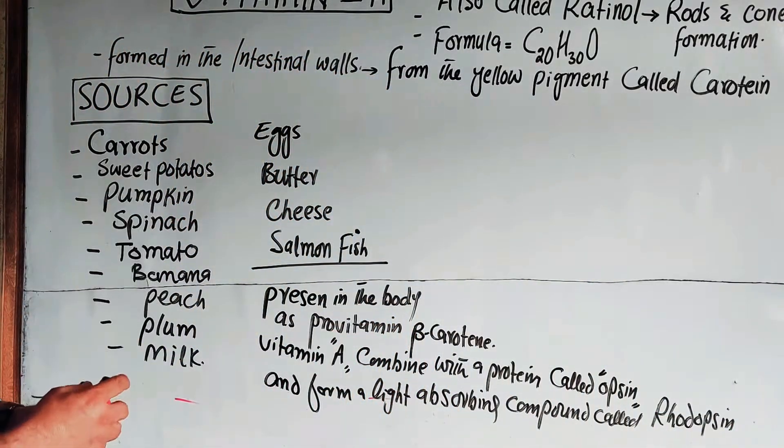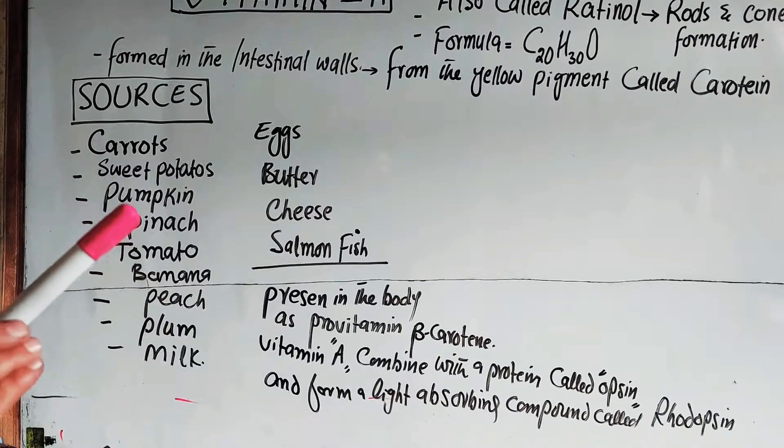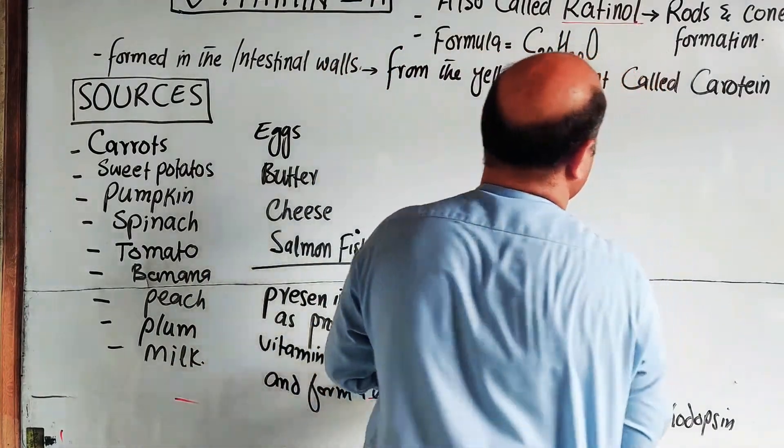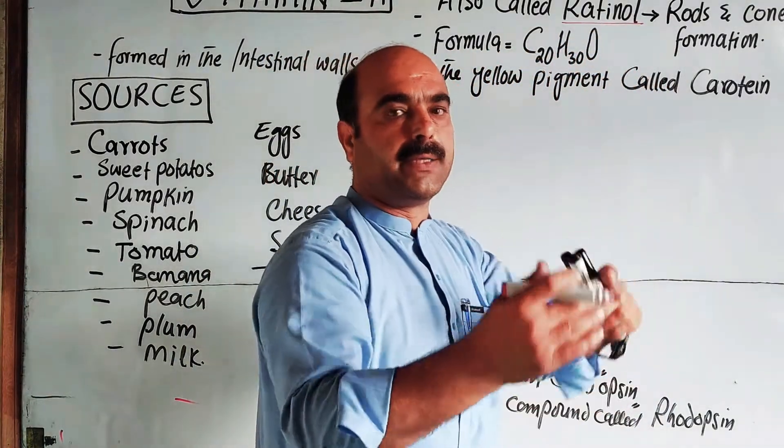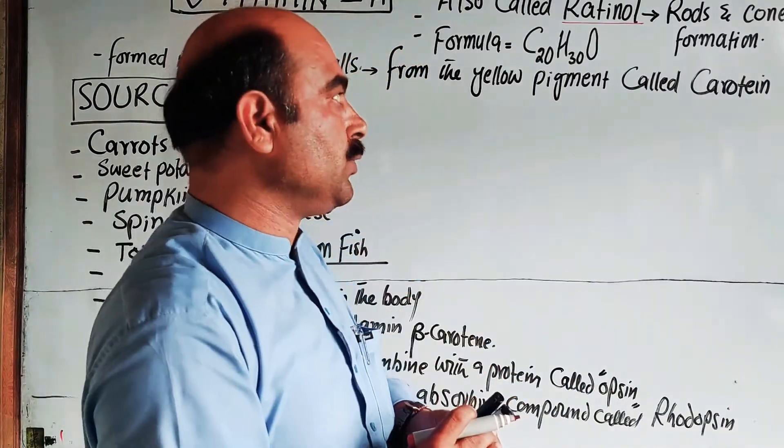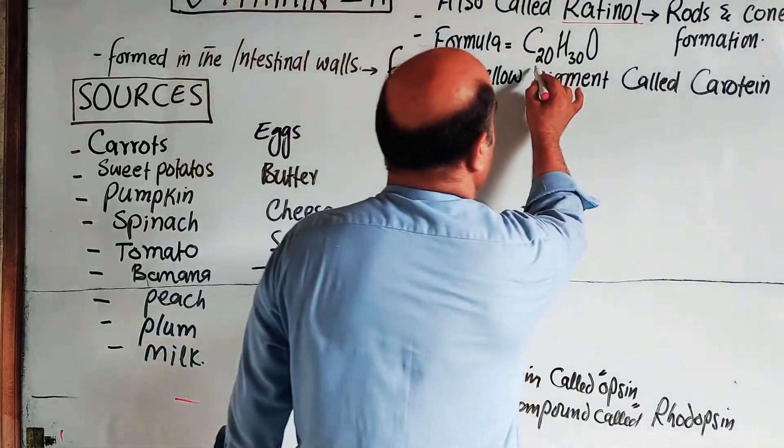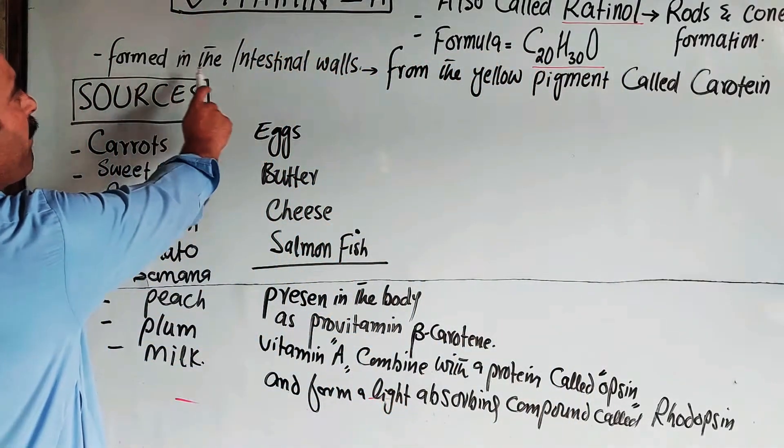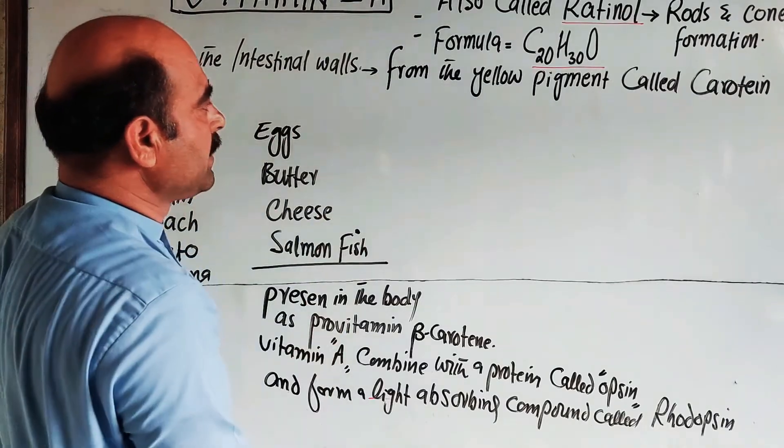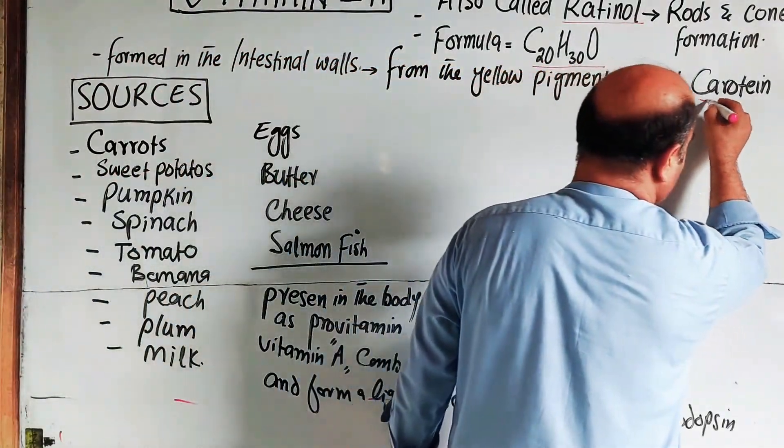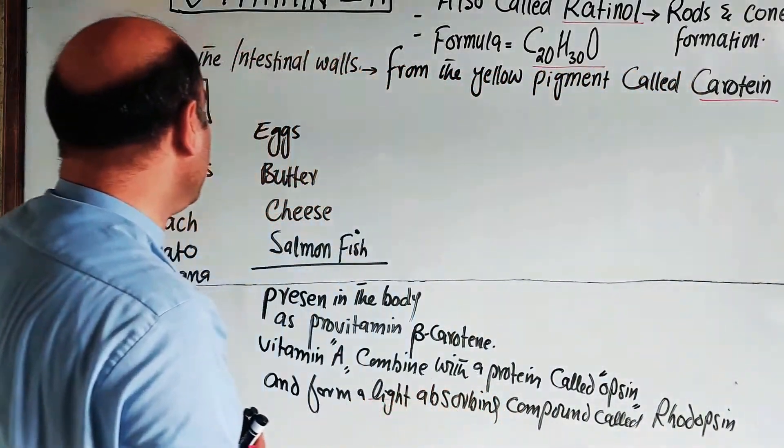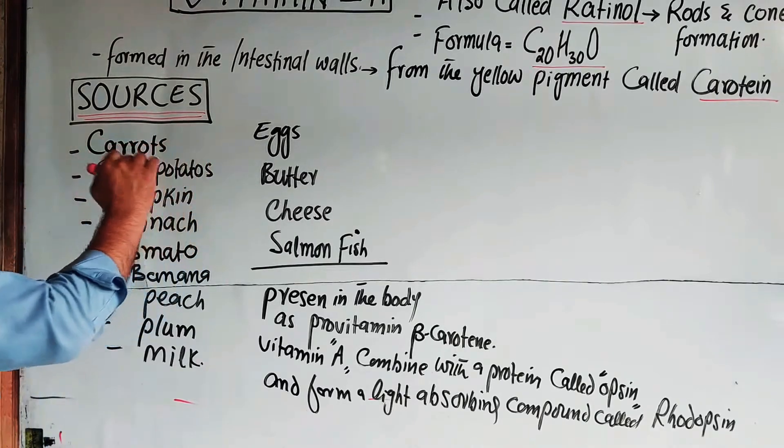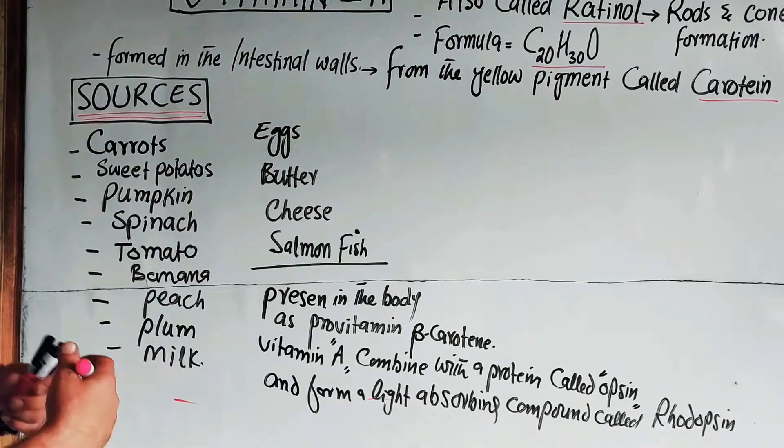Students, we discussed retinol, the chemical formula C20H30OH, how it forms in the intestinal walls from the yellow pigment carotene, and the sources of Vitamin A.